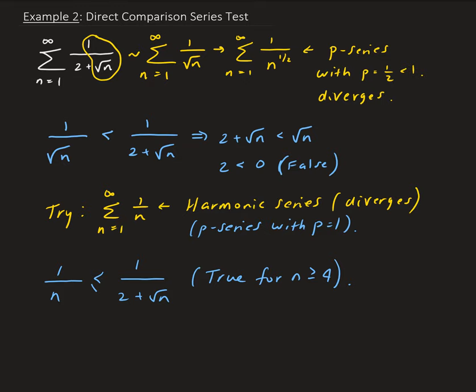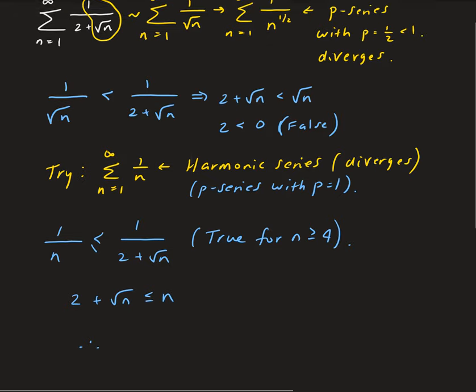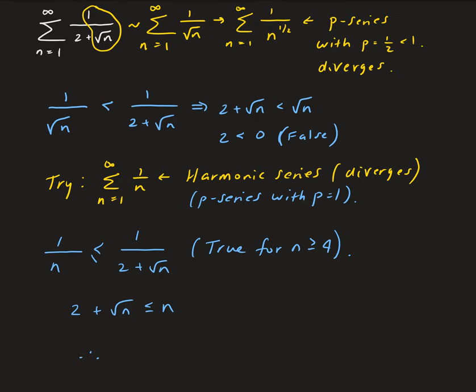We don't have to worry about what happens for n equals 1 to 3, because a few lessons ago I explained that we can disregard the first few terms. If a series is converging it will still converge if we remove the first few terms; if a series is diverging and we remove the first few terms, it will still diverge. So this is fine — this is true for n greater than or equal to 4. You can even see that graphically: 2 plus root n is less than or equal to n. Since this is a true statement, that means our original series is going to diverge, because the one we chose — 1 over n — is diverging. Therefore, the original series that we have is diverging.